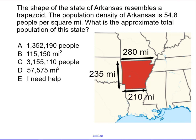So let's label the trapezoid shape of the state. The height is 235 miles, base 1 is 280 miles, and base 2 is 210 miles.